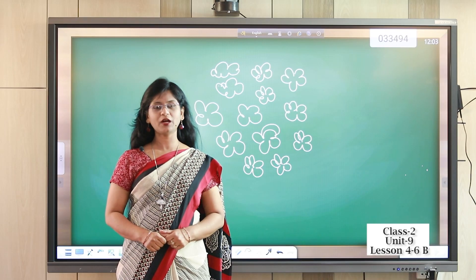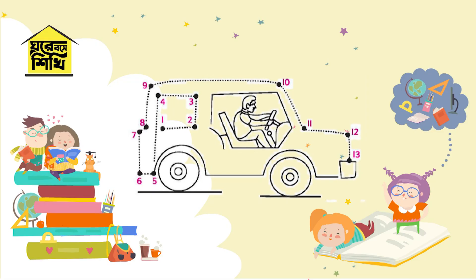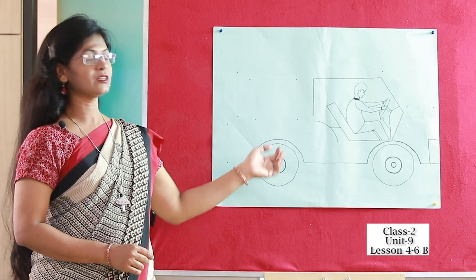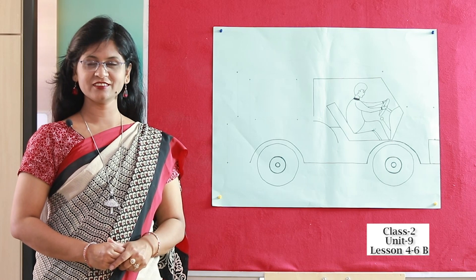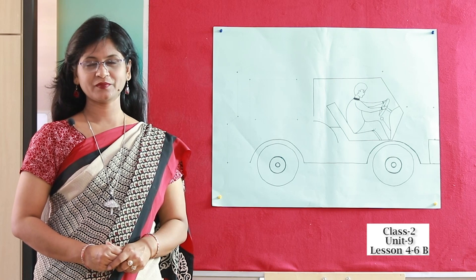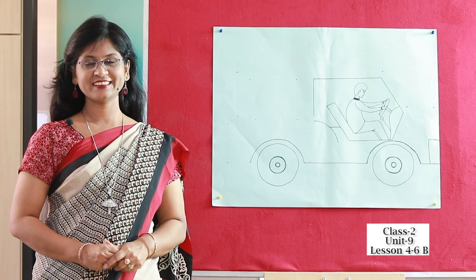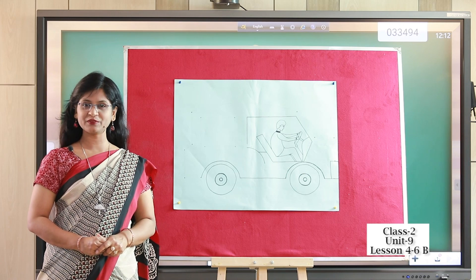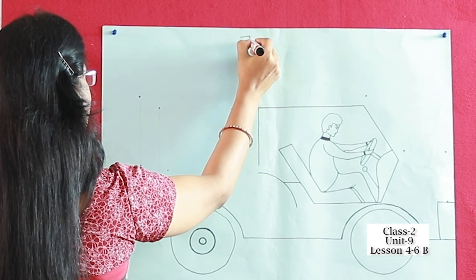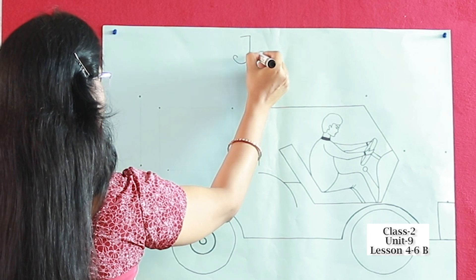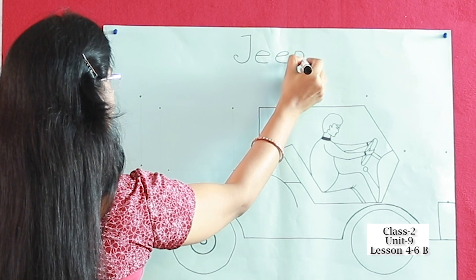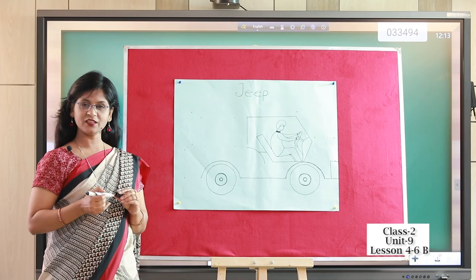Now I am going to show a picture. Students, can you see the picture clearly? Can you guess what it is? I am going to help you. What is for J? Yes, J is for zip. It's a zip.